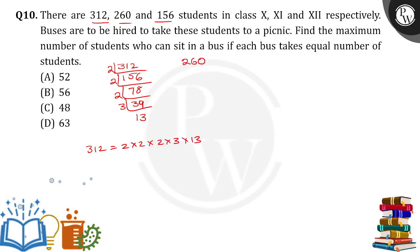Now, for 260, 2 cancels for 130 times. Again, 2 cancels for 65 times. This time, 5 cancels for 13 times. So 260 is equal to 2 into 2 into 5 into 13.